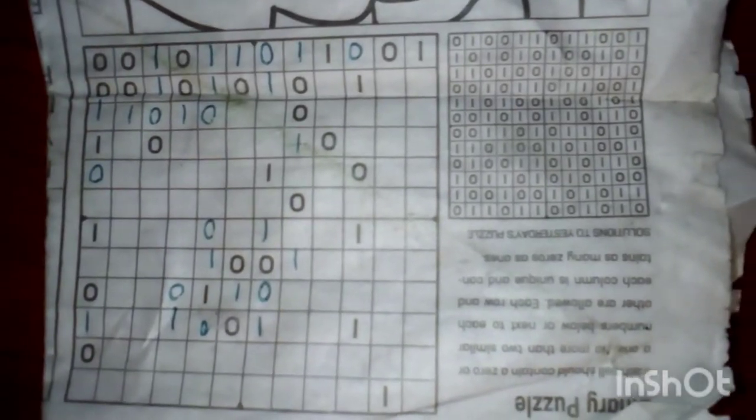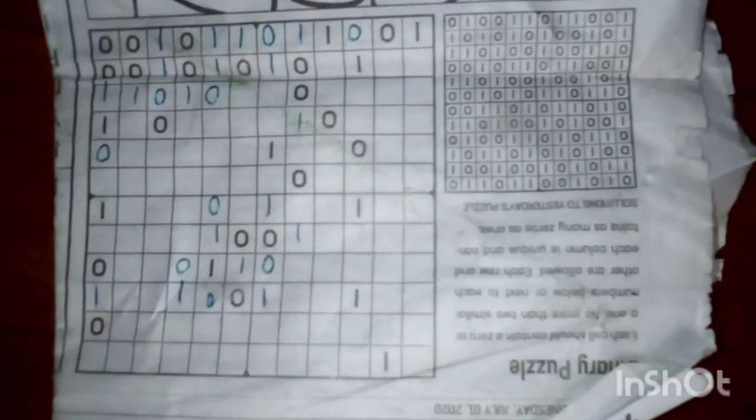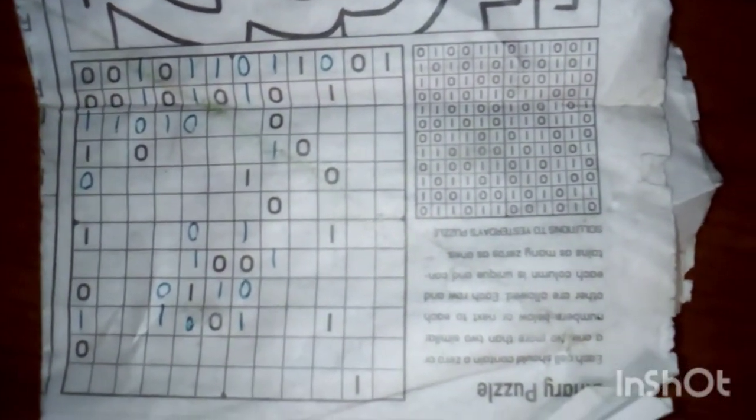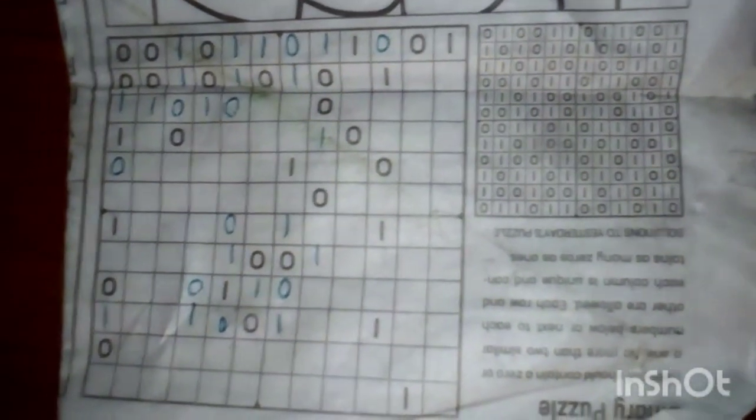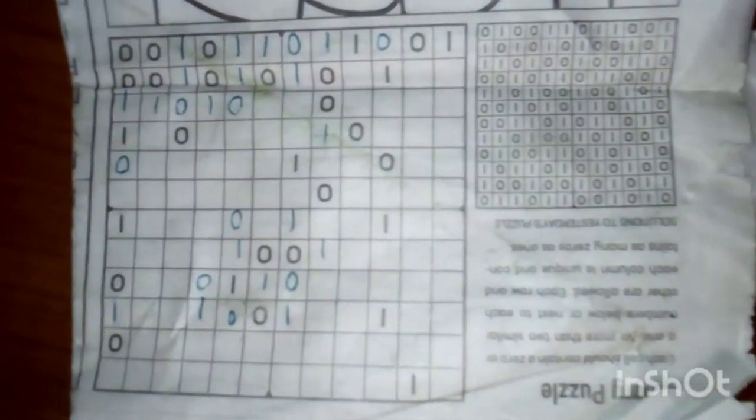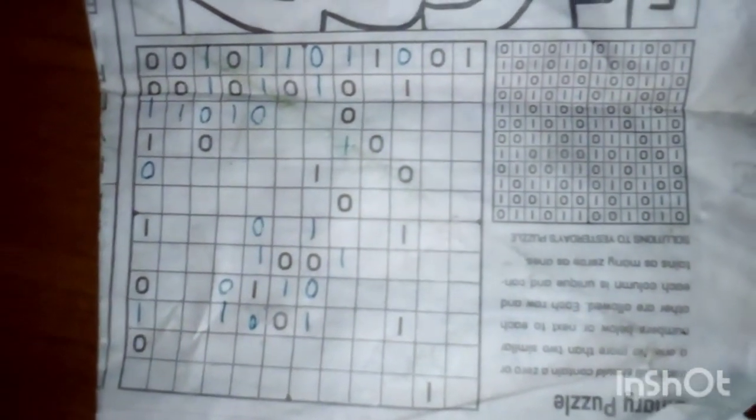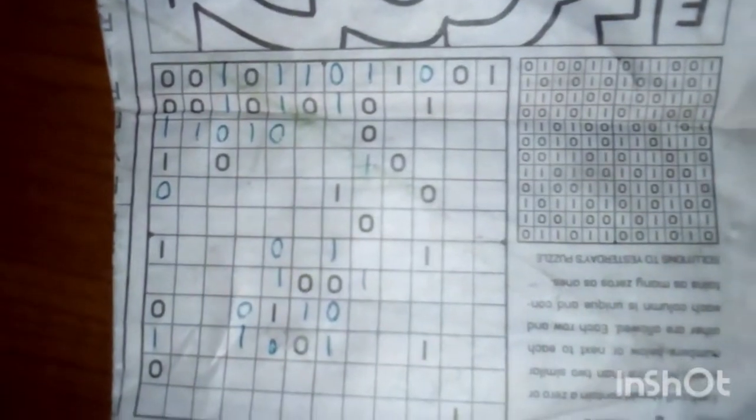So here it is. Being binary, there are only two rules. One, one, one is not allowed. Zero, zero, zero is not allowed. You can't have three at any point in time. And you must have six ones, six zeros, whether it be across or down. Simple.